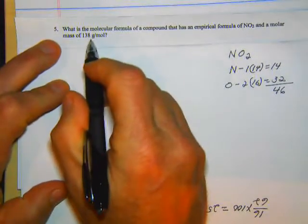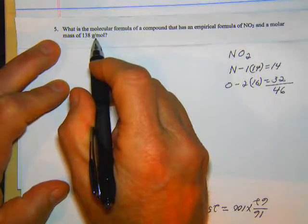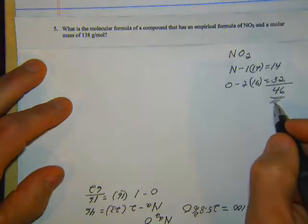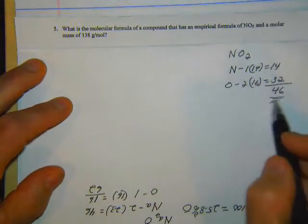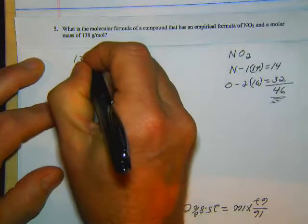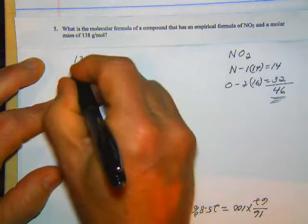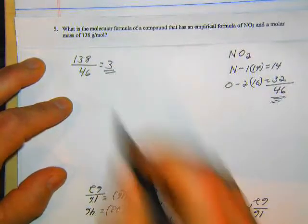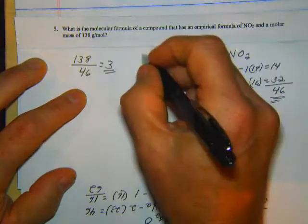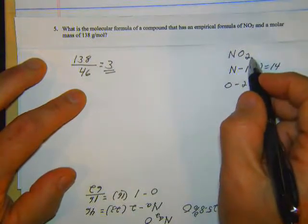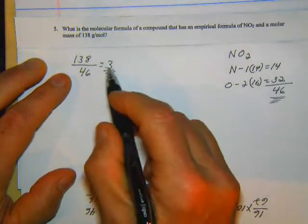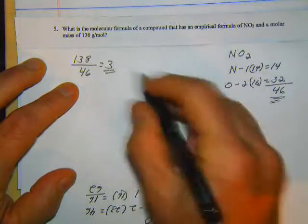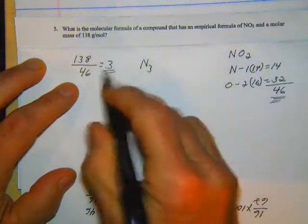We're given 138 grams per mole and we want the molecular formula. The molecular formula is some multiple of the empirical formula. Take 138 grams divided by 46 — that comes out to 3. So 3 is our multiplier. With NO₂ and a multiplier of 3: three times one is 3, three times two is 6, giving us N₃O₆.